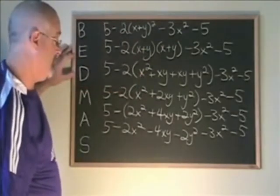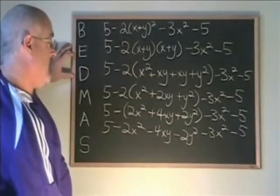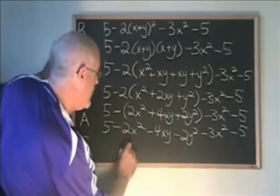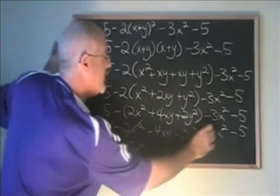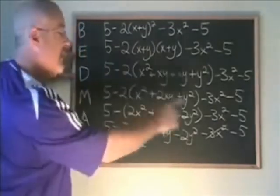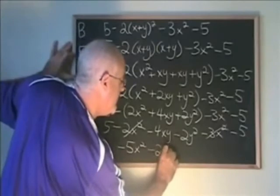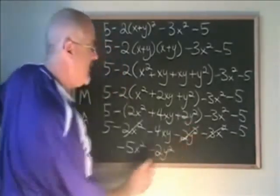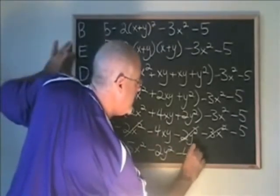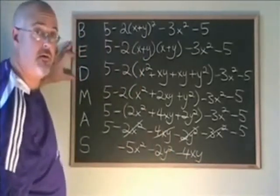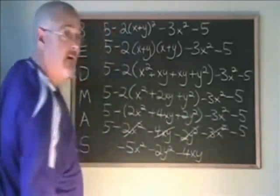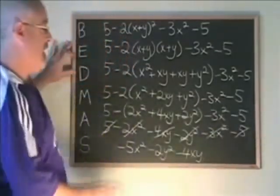It's time to combine similar terms. We have a negative 2x squared and a negative 3x squared. They combine to negative 5x squared, and I cross them out so that I know I'm finished with them. We have a negative 2y squared and it's the only y squared term. We copy it down and cross it out. We have minus 4xy, which is the only xy term. Copy it down and cross it out. Finally, our constant terms. We have positive 5, minus 5. They cancel. And we have our final answer.